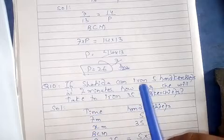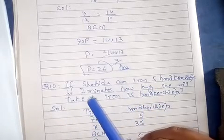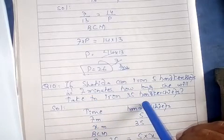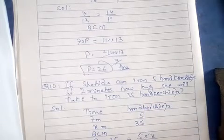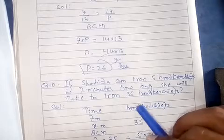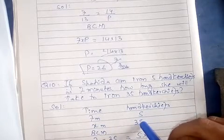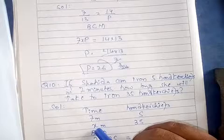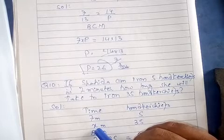Shahida irons 5 handkerchiefs in 7 minutes. Set up a table with time on one side and handkerchiefs on the other. 7 minutes for 5 handkerchiefs, and x minutes for 35 handkerchiefs.